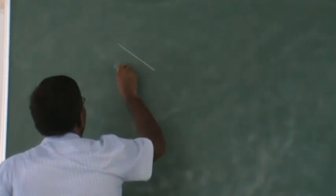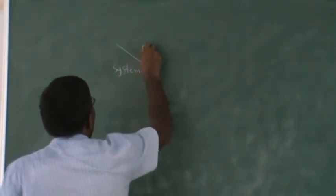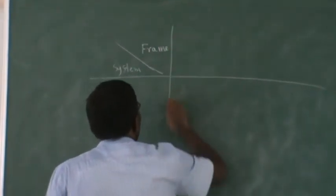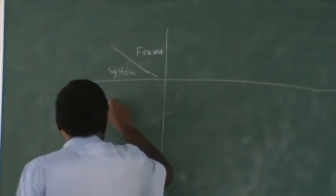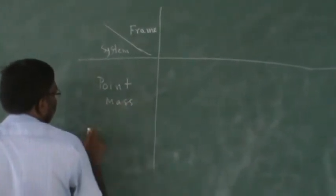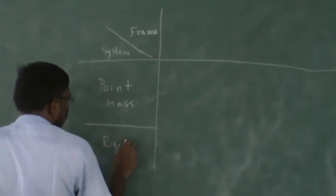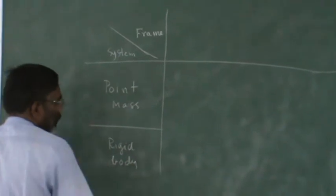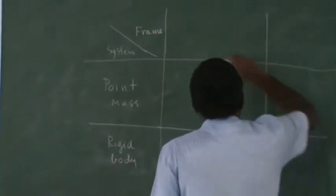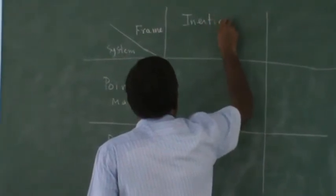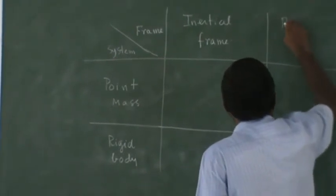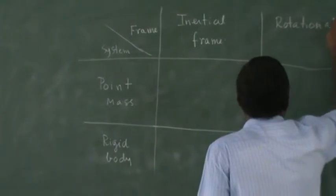So let's say you have a system and a frame. A system can have two types: point mass system or rigid body. And frame, you can have an inertial frame, a non-inertial frame, in particular I want to call the rotational.